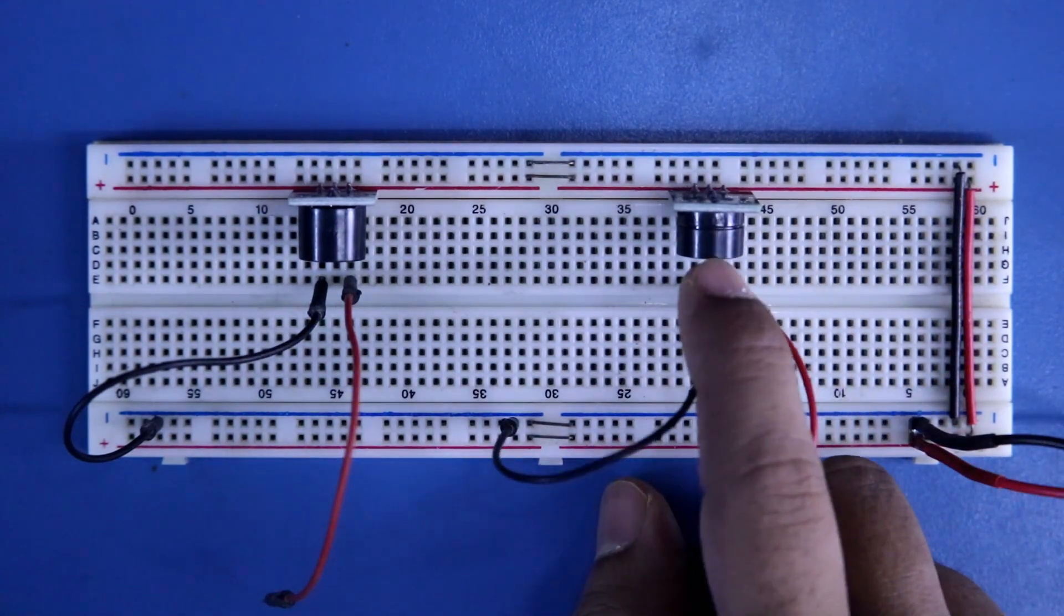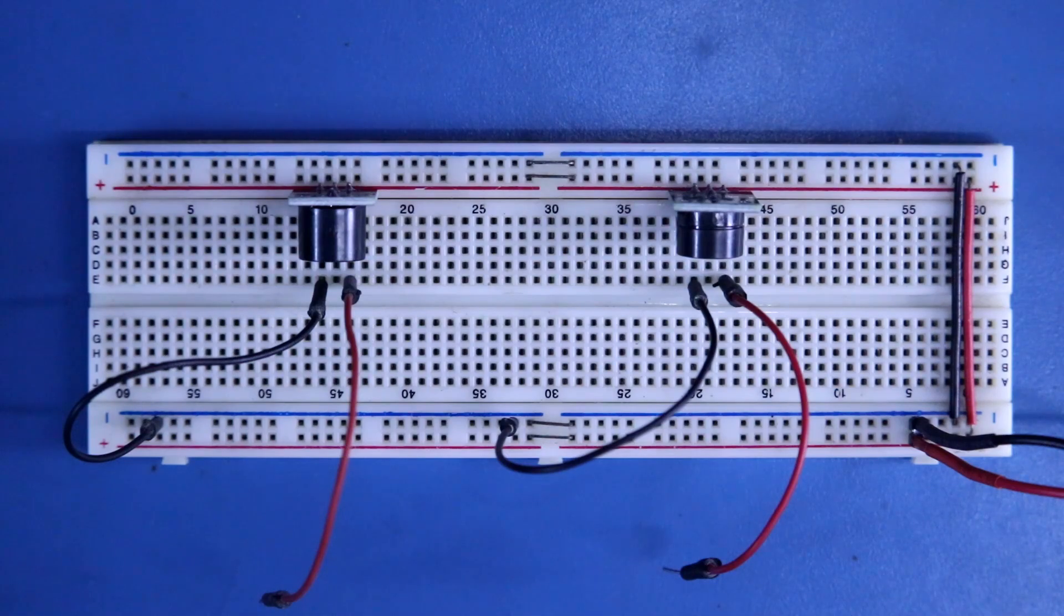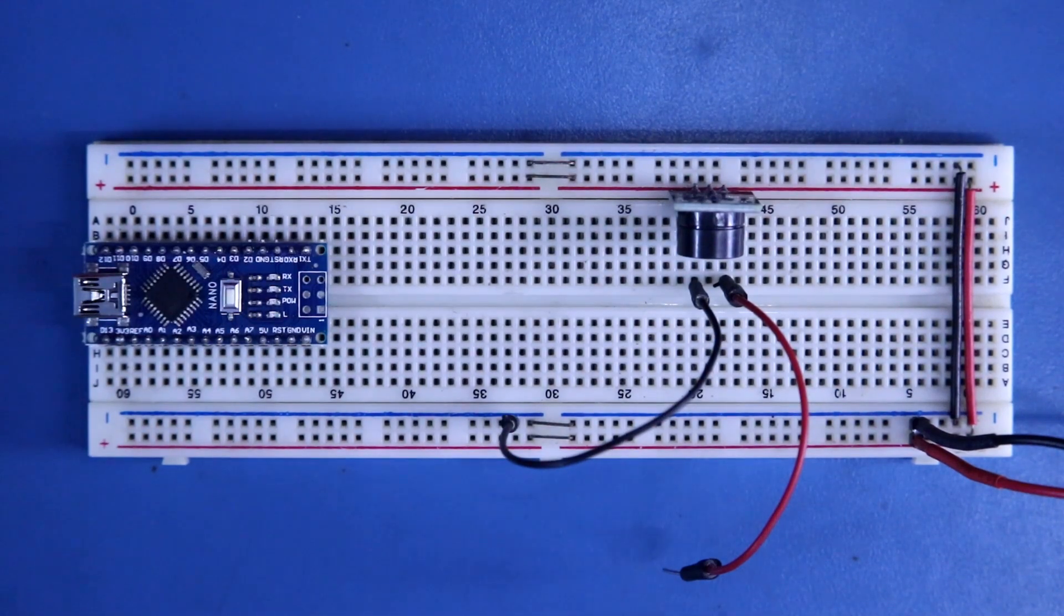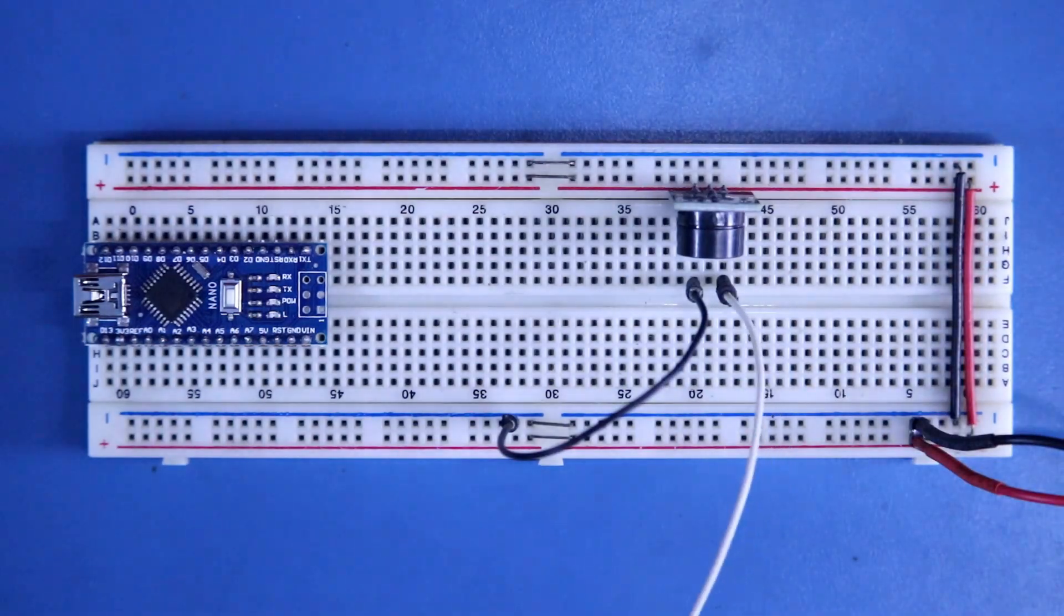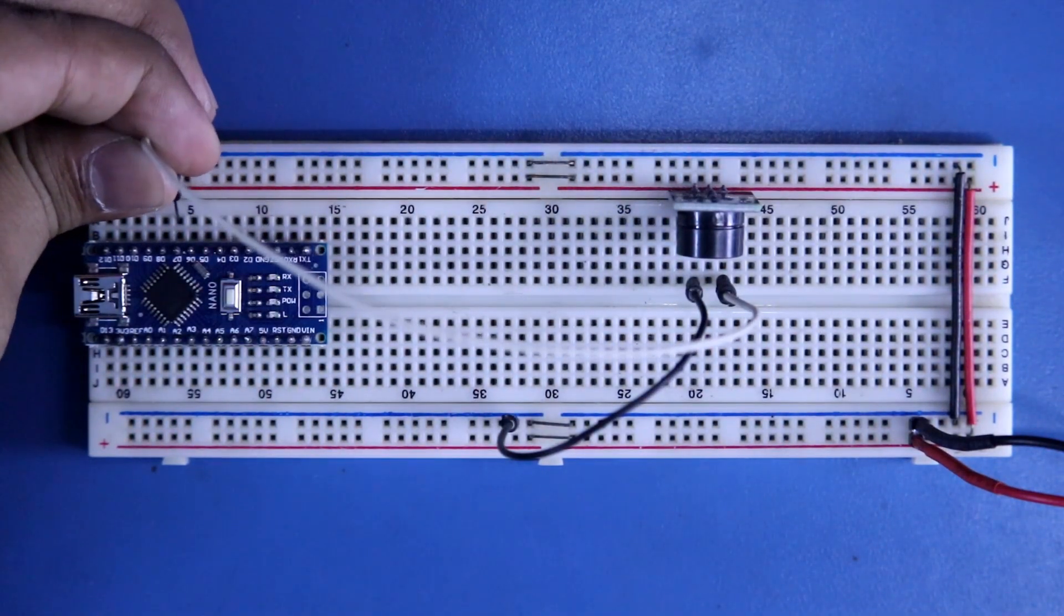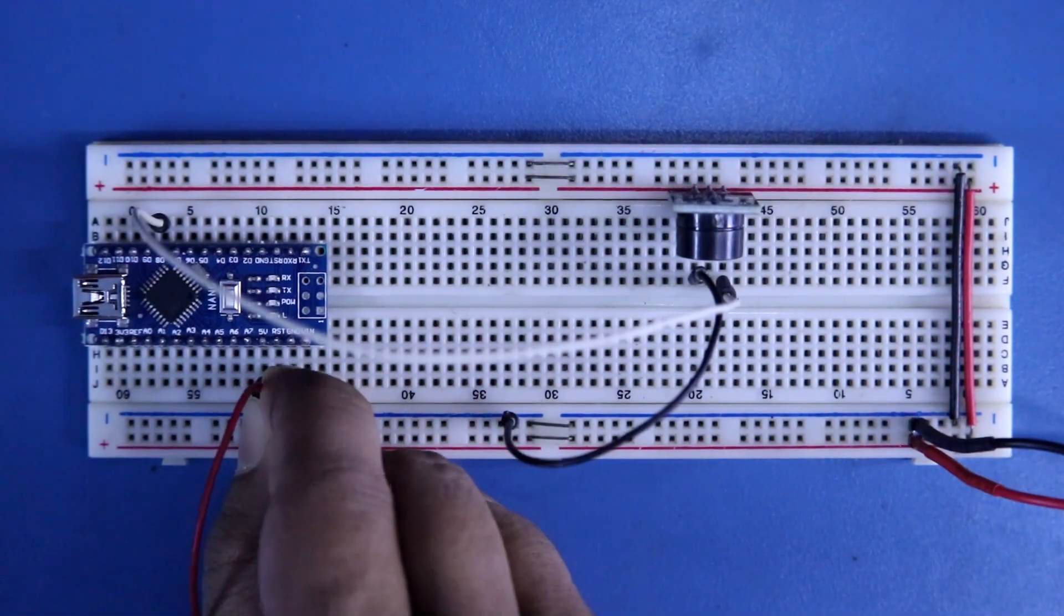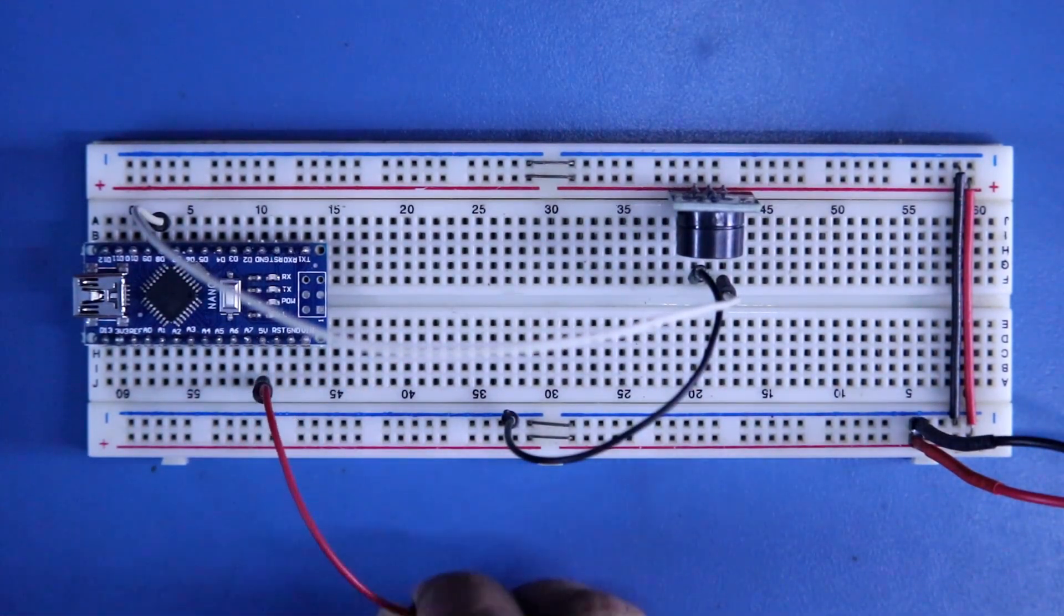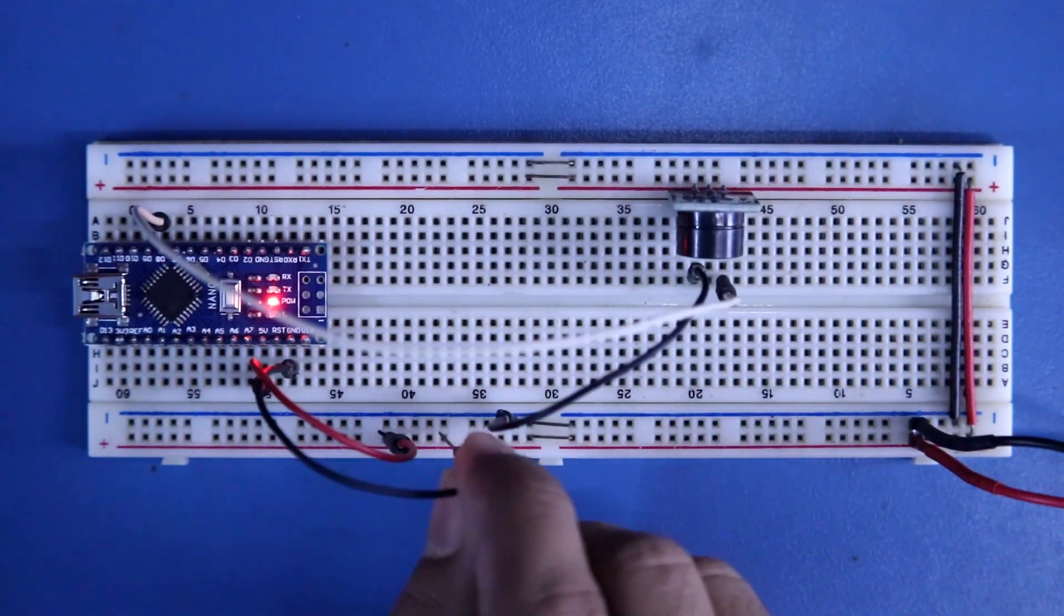To get sound from this we need microcontroller. So I am using Arduino for this. I will connect the positive pin of the buzzer to the Arduino pin 8. This is D8. 5V pin of Arduino is connected to the positive rail and ground pin of Arduino is connected to the negative rail.